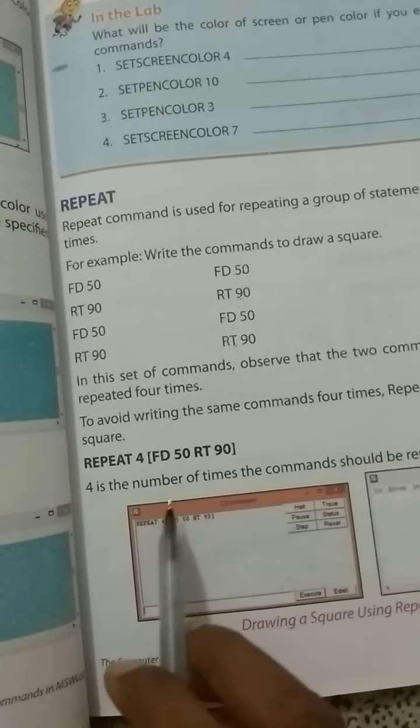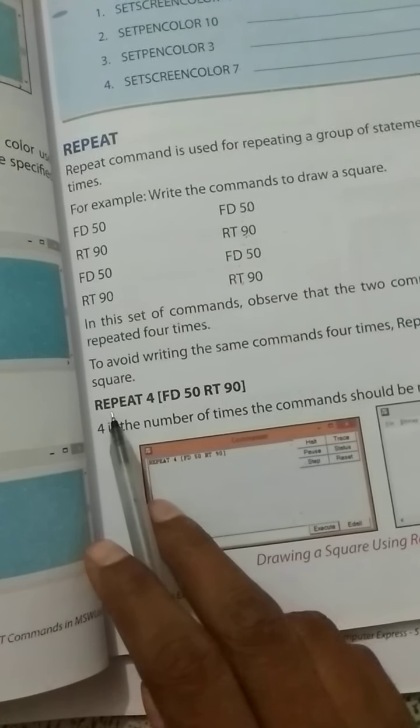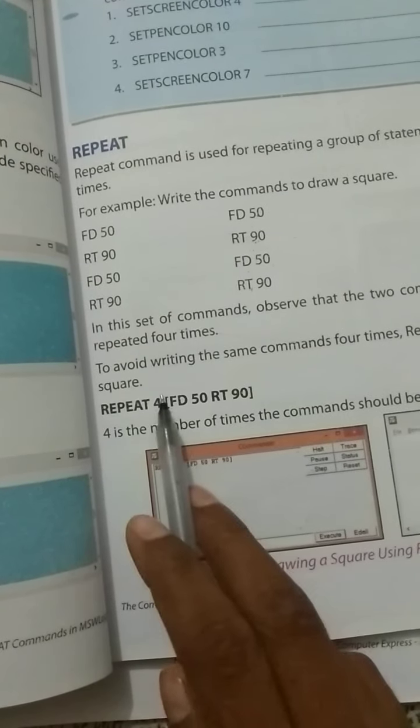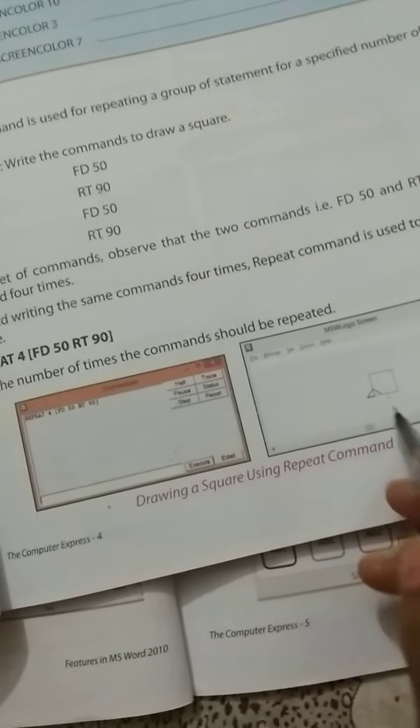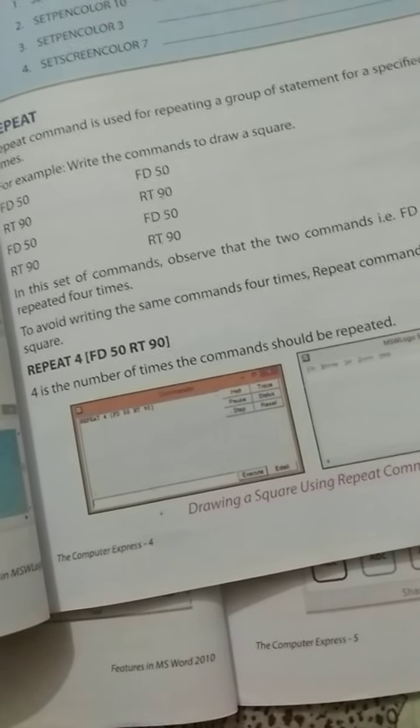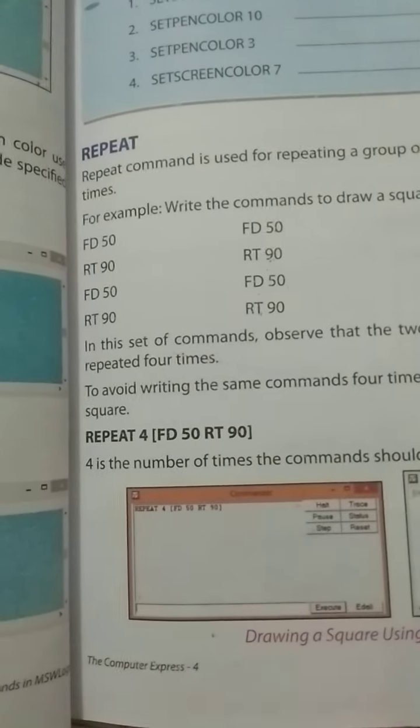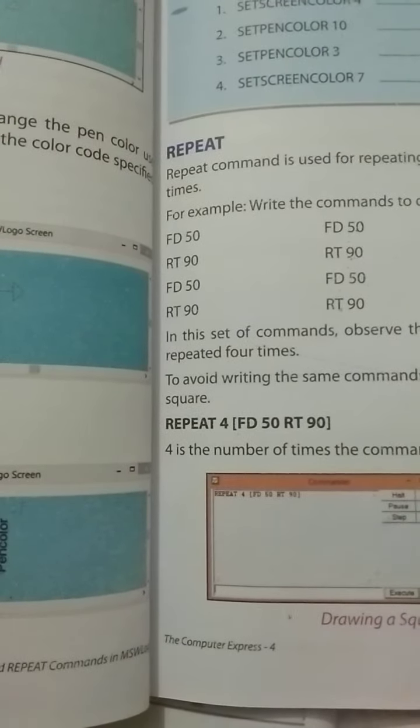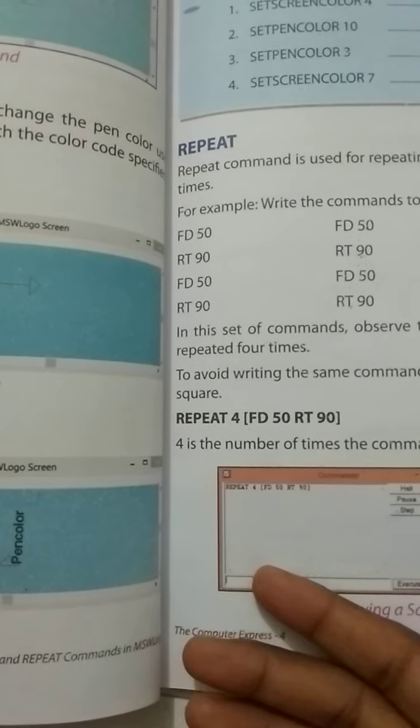Repeat 4 [FD 50 RT 90]. First you have to write repeat 4, then angle bracket, FD 50 RT 90, then your square will be designed on your page. This is very easy, so you don't have to follow the long process. You can just take the shortcut.